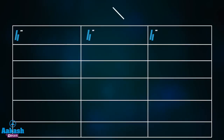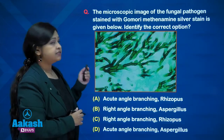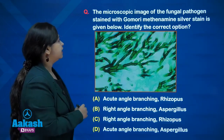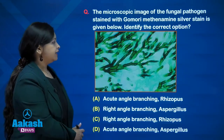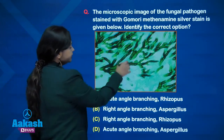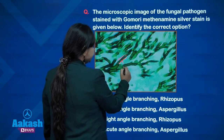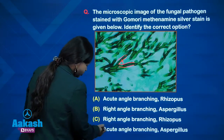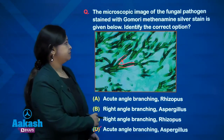Now we will solve this question. The microscopic image of the fungal pathogen stained with Gomori methenamine silver stain is given. In this image there are narrow hyphae, they are septate and there is acute angle branching — hence this is aspergillus. The answer is option D, showing acute angle branching: aspergillus.